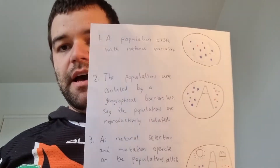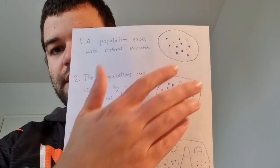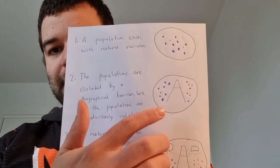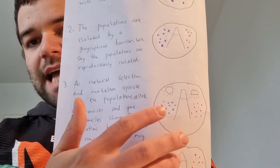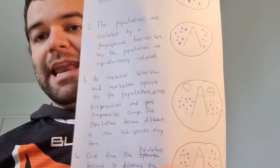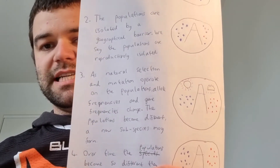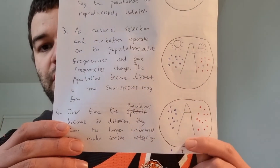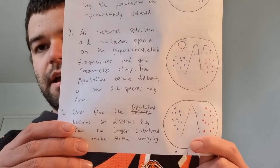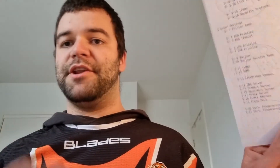So the basics are: there's a population with variation; the population gets separated; as they adapt to new environments differently, their allele frequencies change and they gain more differences; and after enough time, they are no longer capable of breeding to make fertile offspring with each other, meaning a new species has formed.